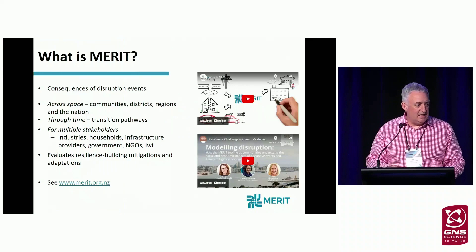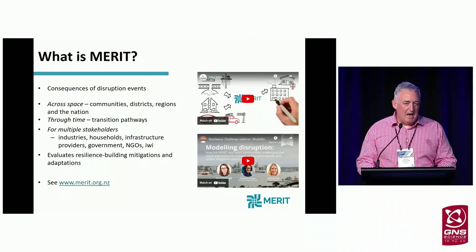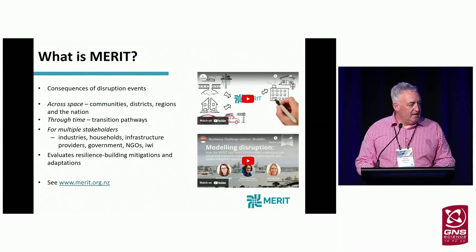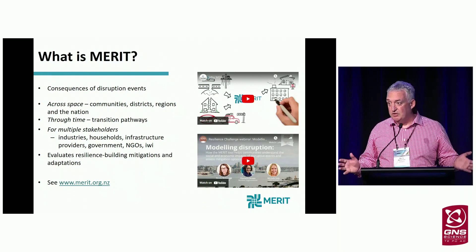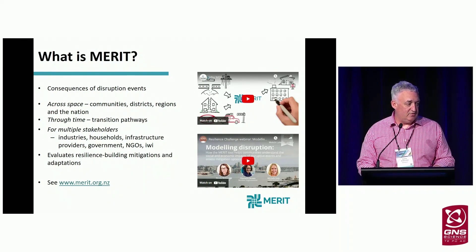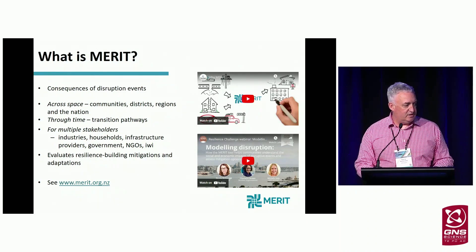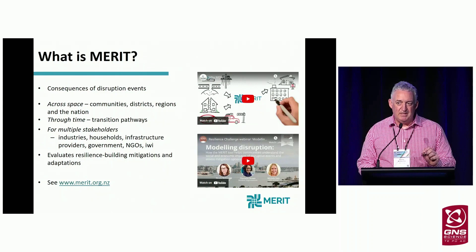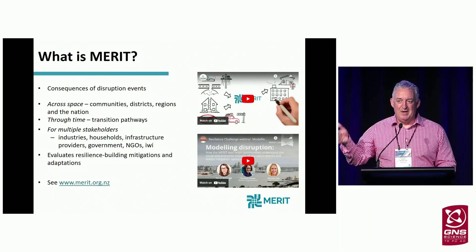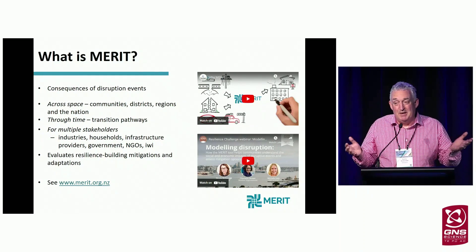So what is MERIT? MERIT looks at disruption consequences. It does this across space — communities, districts, regions, and national scale — and also through time. It can do it for up to 100 years at low resolutions, and at high resolutions for up to about 20 years into the future, tracking through not just the response phase but also the recovery phase of events. That's really important because there are interesting ways of telling the story to communities through transition — giving people hope. If we just look at the endpoints, we tell them the story of big numbers, which are meaningless without understanding the context.